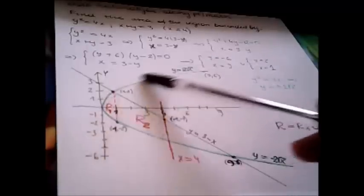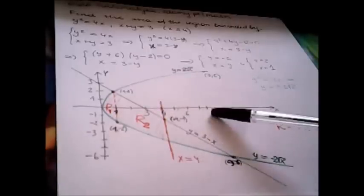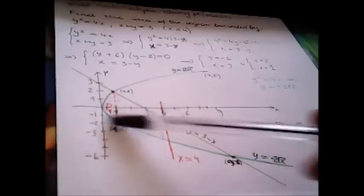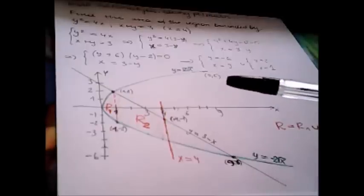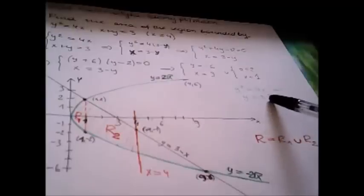The y value of the upper part of the parabola is positive, and the y value of the lower part of the parabola is negative. From y squared equals 4x we obtain y equals plus 2 square root of x and y equals minus 2 square root of x. The equation of the upper curve is y equals 2 square root of x, and of the lower curve y equals minus 2 square root of x.